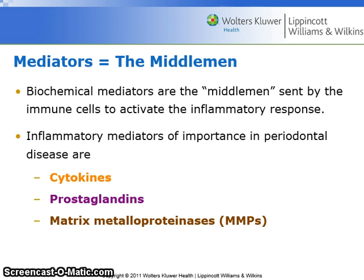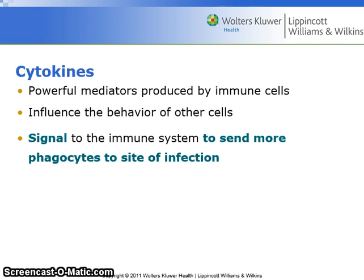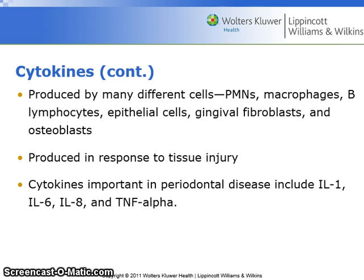Inflammatory mediators of importance in periodontal disease are cytokines, prostaglandins, and matrix metalloproteinases, or MMPs. Cytokines signal the immune system to send phagocytes to the site of infection. They are produced by many different cells: PMNs, macrophages, B lymphocytes, epithelial cells, gingival fibroblasts, and osteoblasts, and they are produced in response to tissue injury.